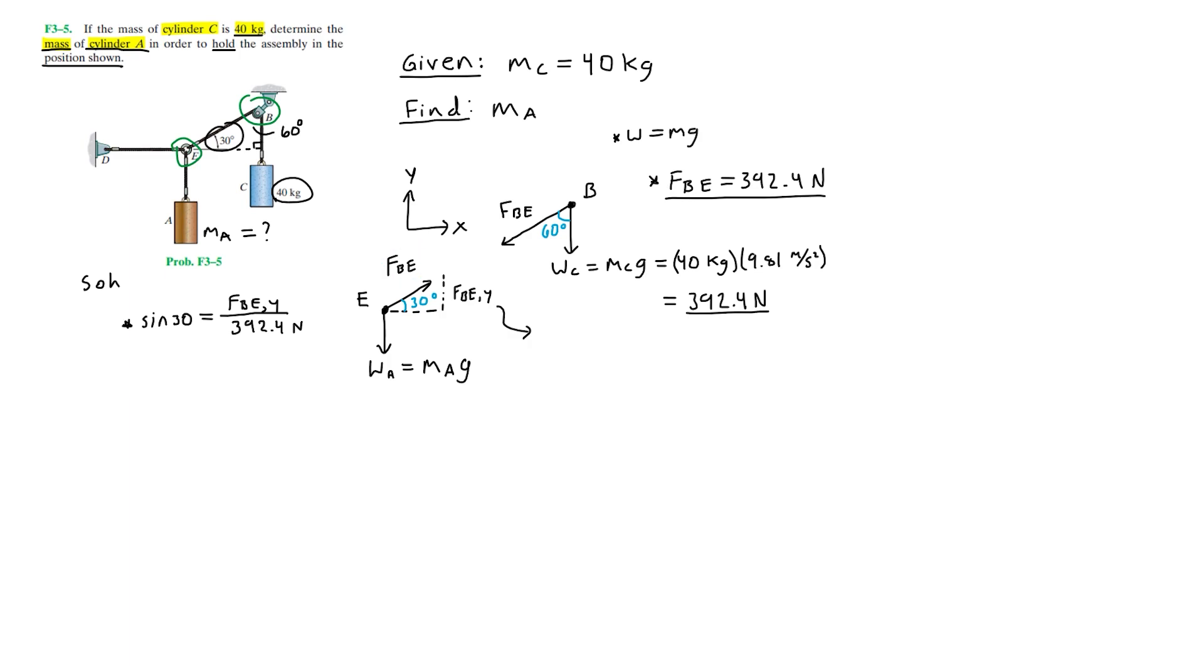As you can see in this sketch, FBE is the hypotenuse and FBEY is the opposite side. Solving for FBEY, we have FBEY equals 392.4 times sine of 30, which is our Y component of the force BE.